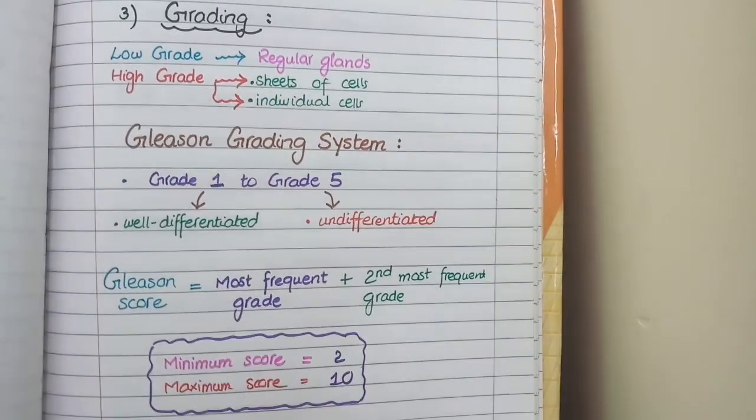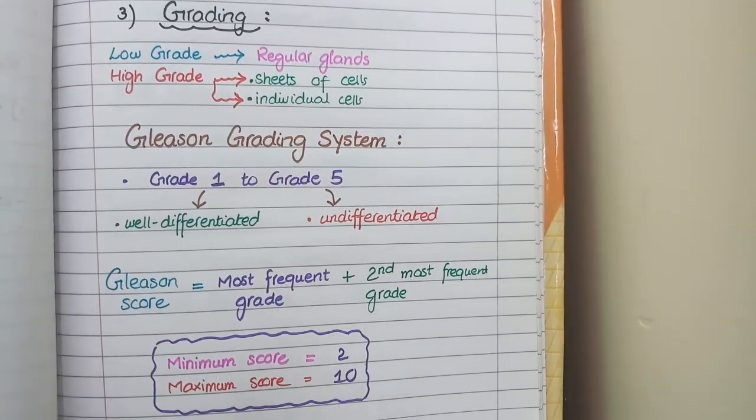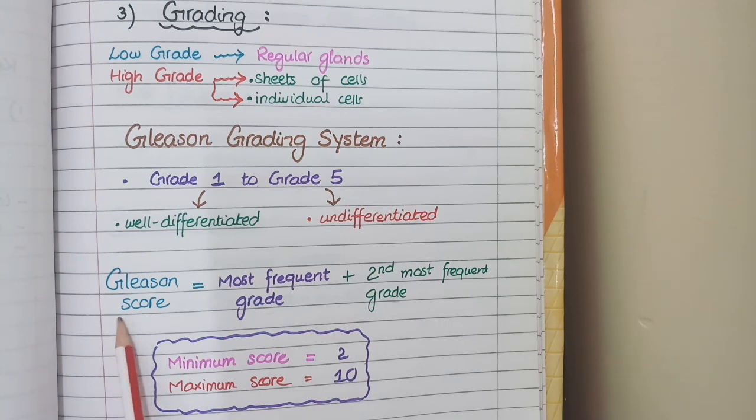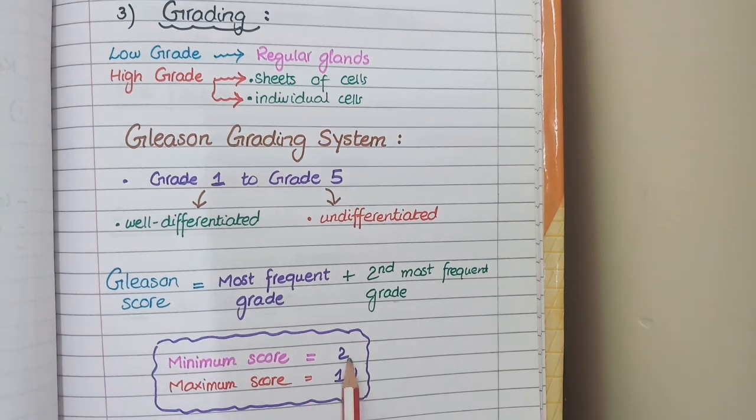Thirdly, for grading we use Gleason grading system in which we add the grade of most frequent appearing region of microscope and the second most frequent region on microscope. The addition of these two gives Gleason score, the minimum value of which can be 2 and the maximum value of which can be 10 and the lower the value of this Gleason score, the better the tumor prognosis will be because such tumors are low grade or well differentiated. This concludes the pathological features in Prostatic Carcinoma. Thank you.